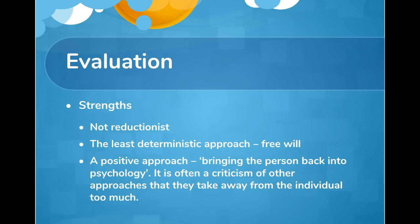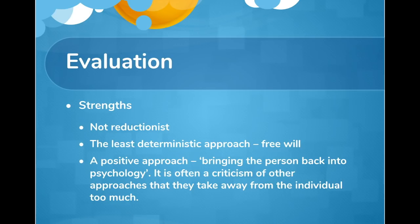Moving on to the AO3 evaluation, there are positives and negatives. Starting with strengths: the humanistic approach is seen as the least reductionist approach. Lots of other approaches break down the human experience into very small parts - such as the psychodynamic approach focusing on id, ego, and superego, or the biological approach looking at certain chemicals to explain human behaviour. Human behaviour is very complex, and reductionism can be an issue. The fact that the humanistic approach uses holism - looking at the whole individual - is really a positive and can be seen as the most valid measure of the human experience.